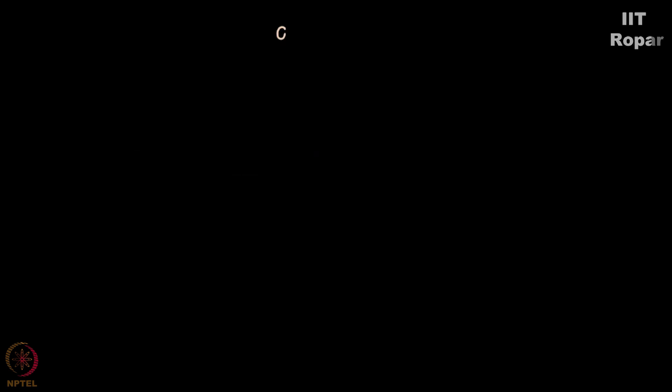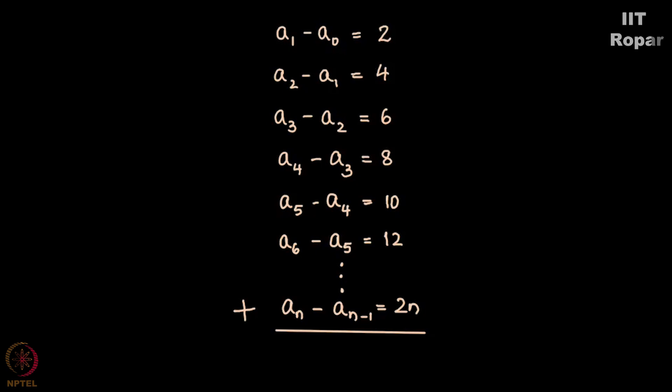Observe I take all these differences: A1 - A0, A2 - A1, A3 - A2, A4 - A3, A5 - A4, and so on up to An - An-1 = 2n. These are the differences. Now what I do is I sum up all these equations.